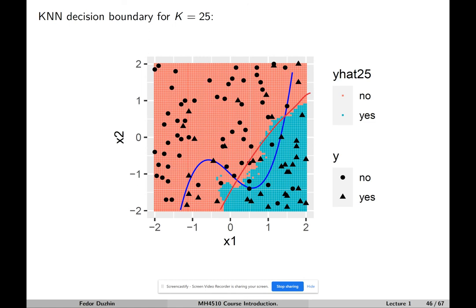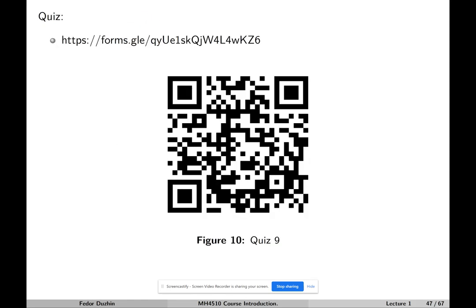My point is that, given the nature of your data, there is always a best value of k, but you cannot really know in advance what it is. In this case, k equals 7 seems to be the best choice. With more data, a higher k would likely be better; with less data, a smaller k would probably be better. Now, a little quiz about KNN.